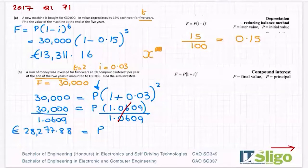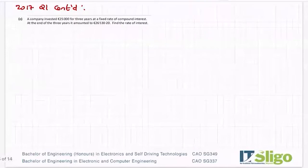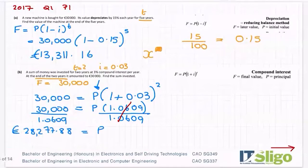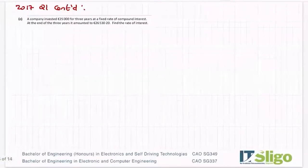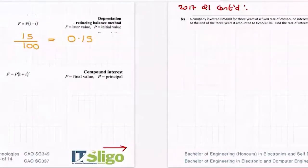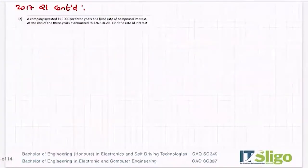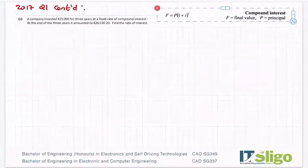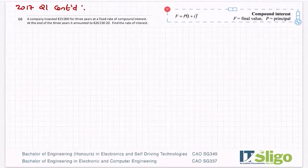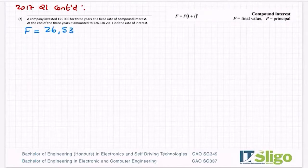So in other words you invested €28,277.88, you left it sitting there for two years and it had gone up to €30,000 at the end of those two years. Important questions those two. Part C, a company invested €25,000 for three years at a fixed rate of compound interest, so it's compound interest again.